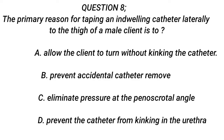Question 8. The primary reason for taping an indwelling catheter laterally to the thigh of a male client is to? A. Allow the client to turn without kinking the catheter. B. Prevent accidental catheter removal. C. Eliminate pressure at the penoscrotal angle. D. Prevent the catheter from kinking in the urethra.